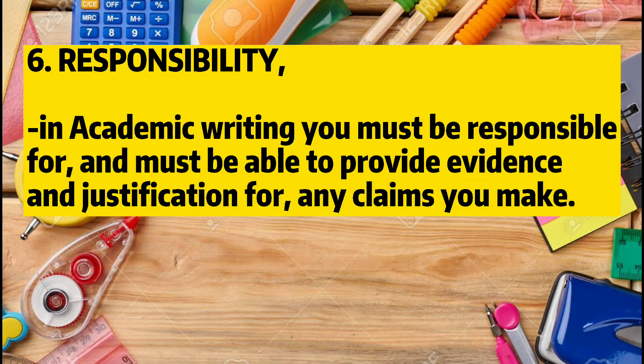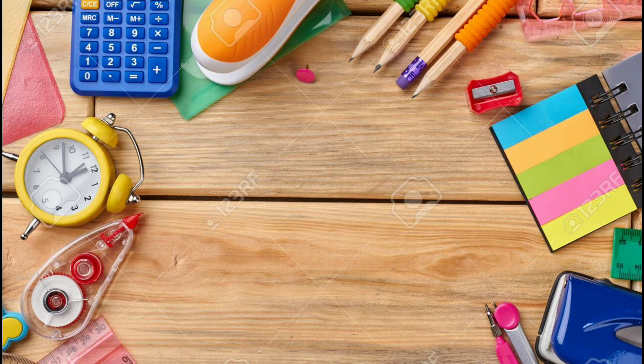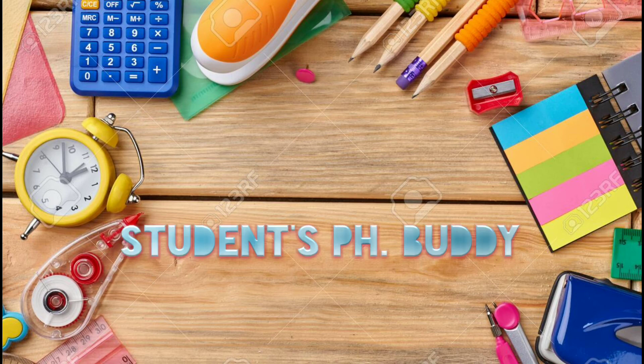Six: Responsibility. In academic writing, you must be responsible for and must be able to provide evidence and justification for any claims you make. You are also responsible for demonstrating an understanding of any source text you use. Thank you for watching. I hope it helps. See you on my next video.